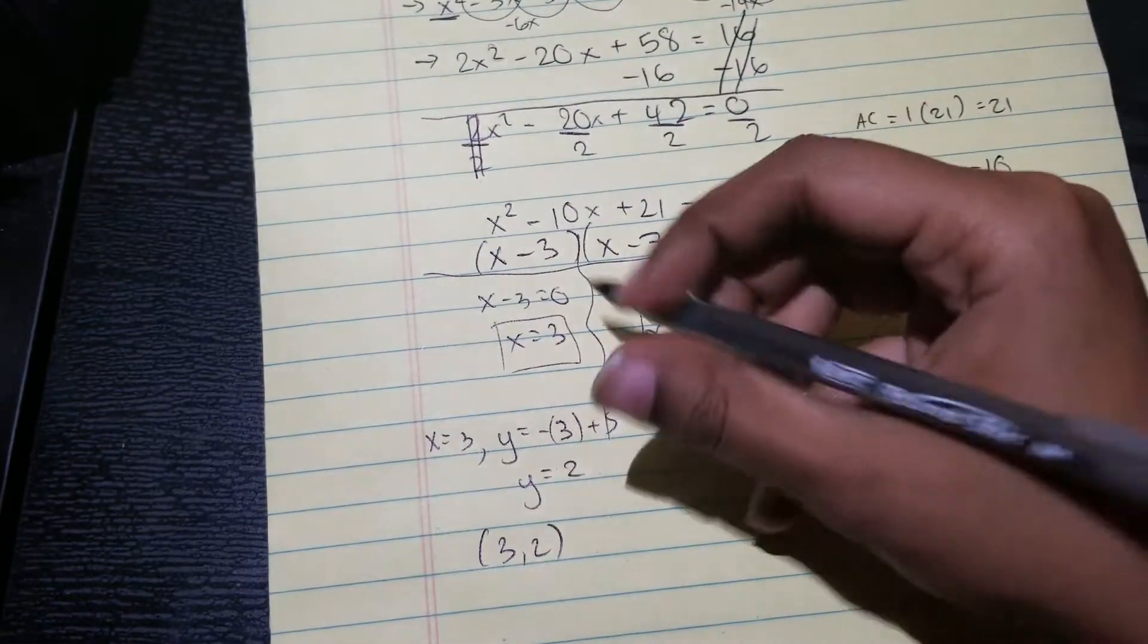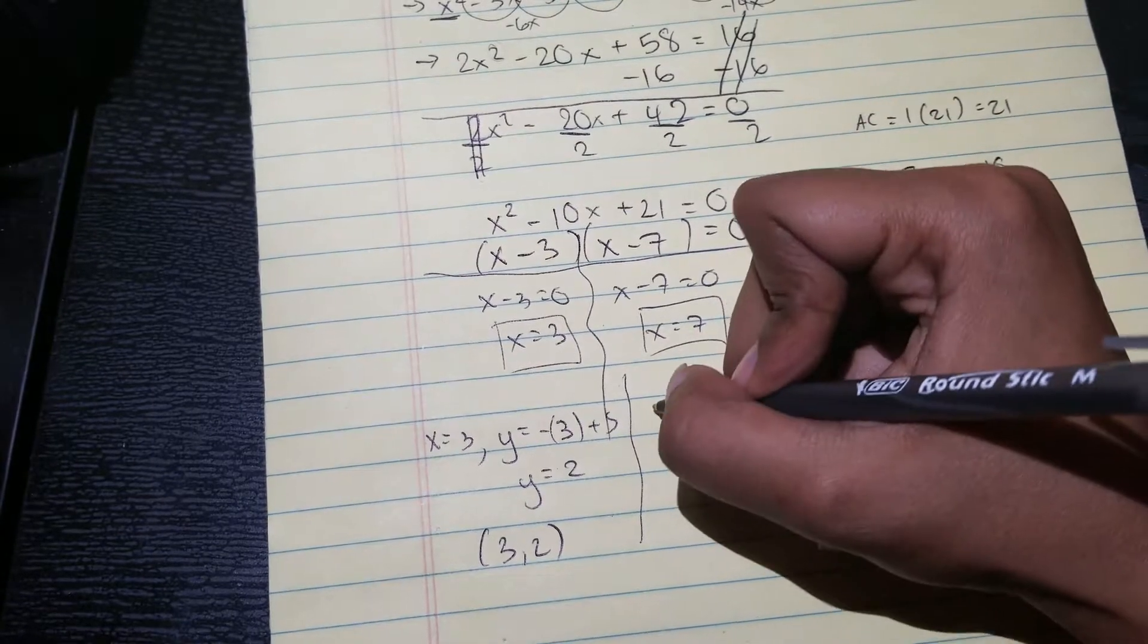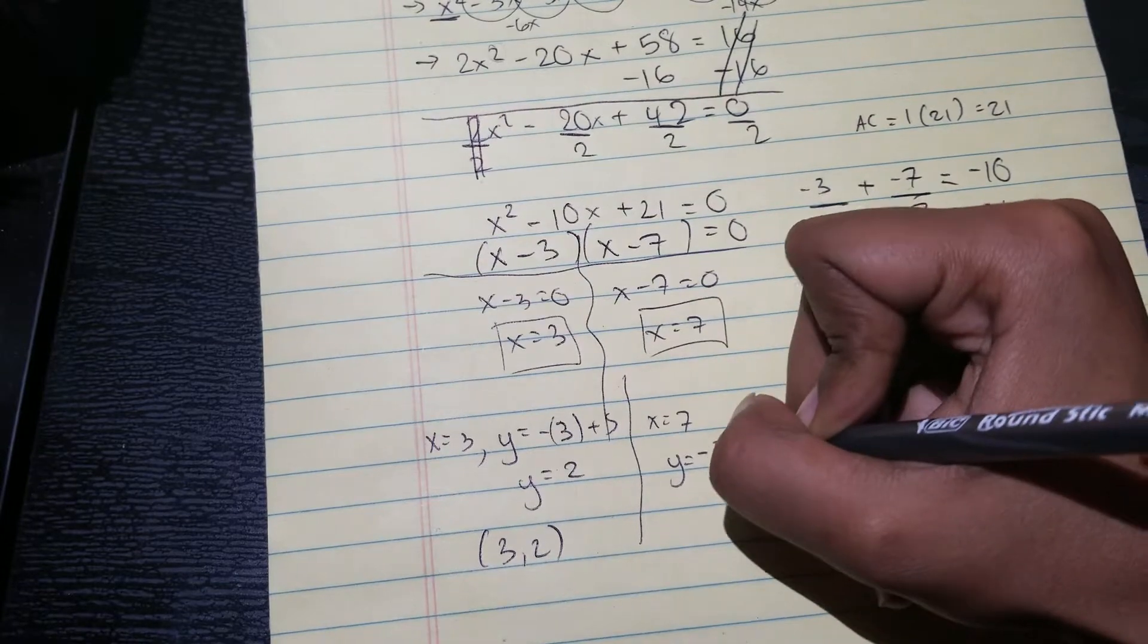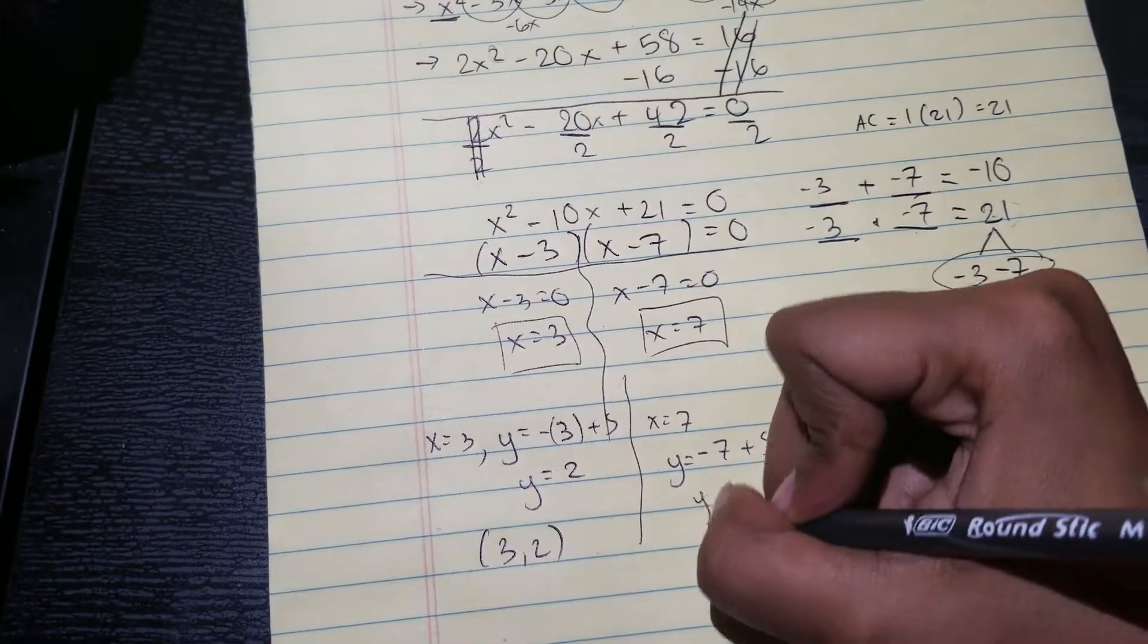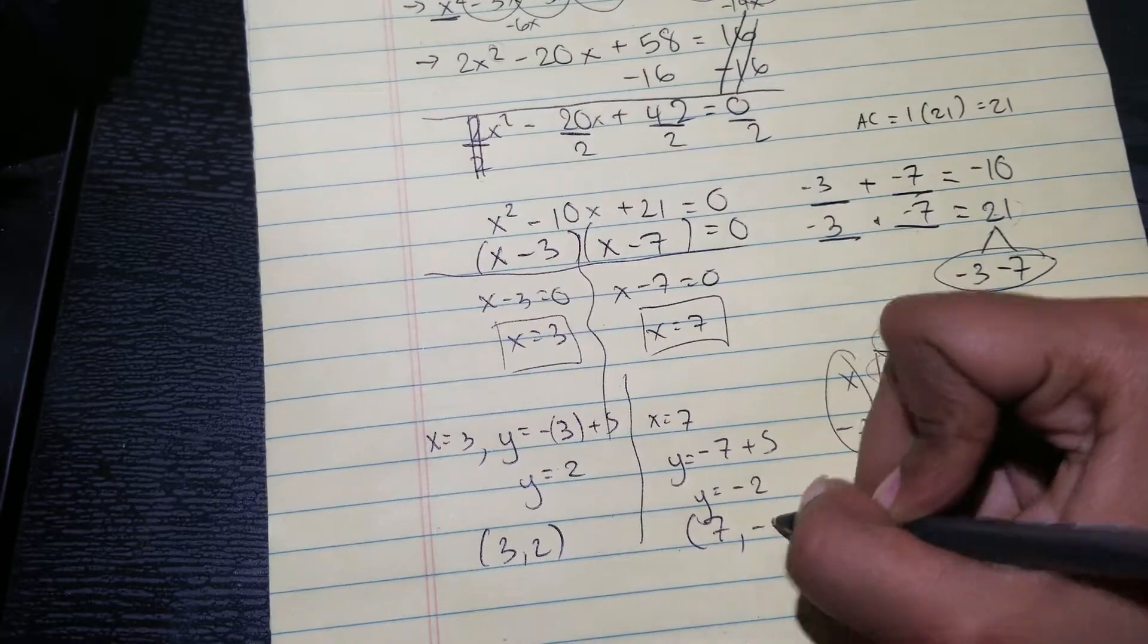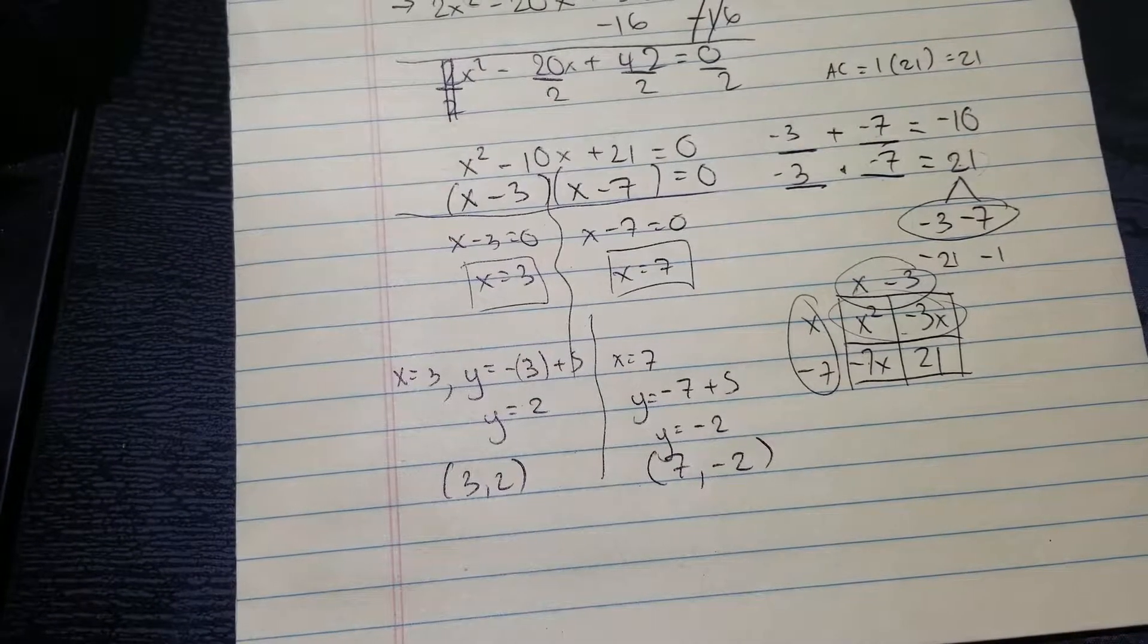And then for this one, when x equals seven, I have y equals negative seven plus five, y equals negative two. So then my coordinate is seven comma negative two, and then that's pretty much it.